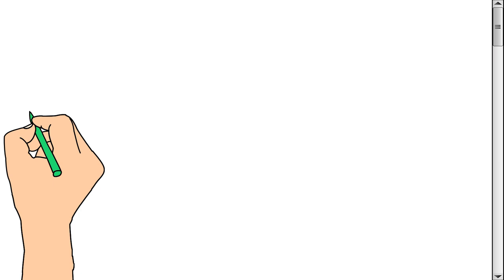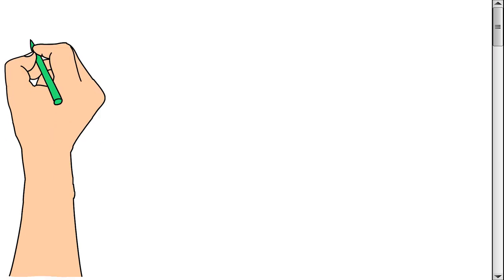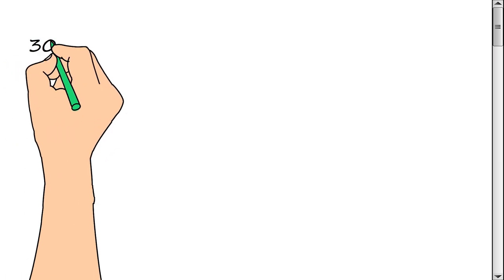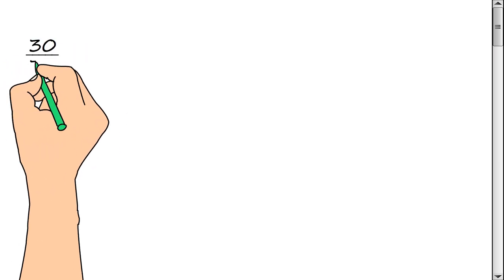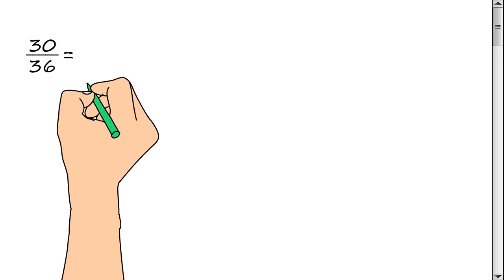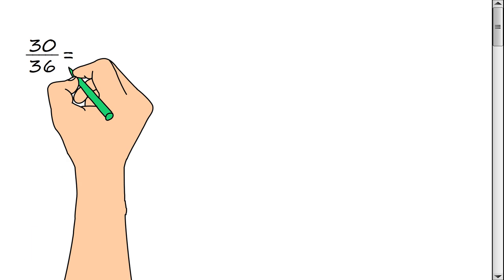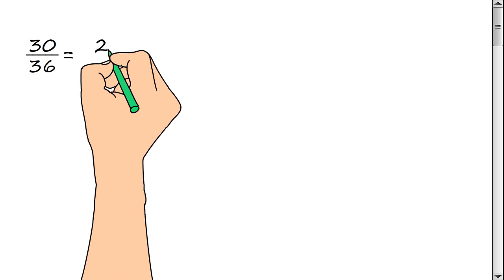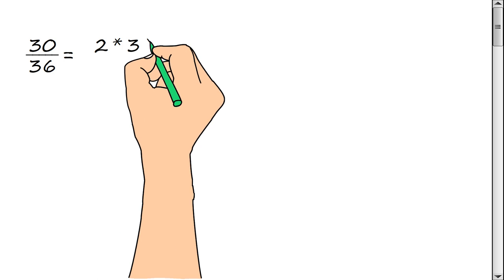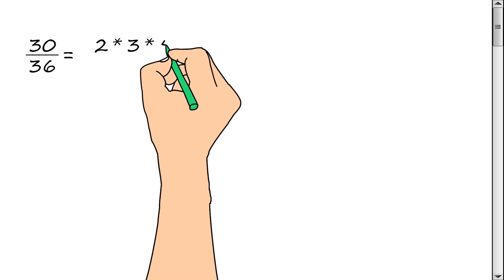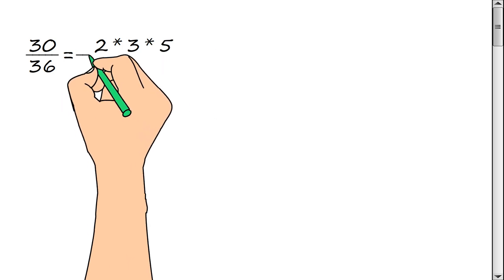We need to reduce the fraction 30/36. We represent the numerator of a fraction as a product of prime factors: 2 multiply by 3 multiply by 5.